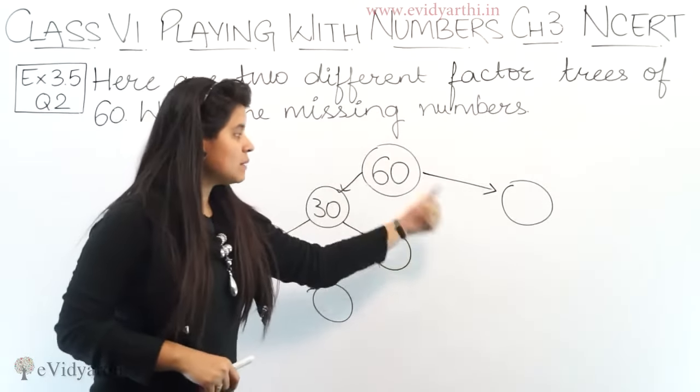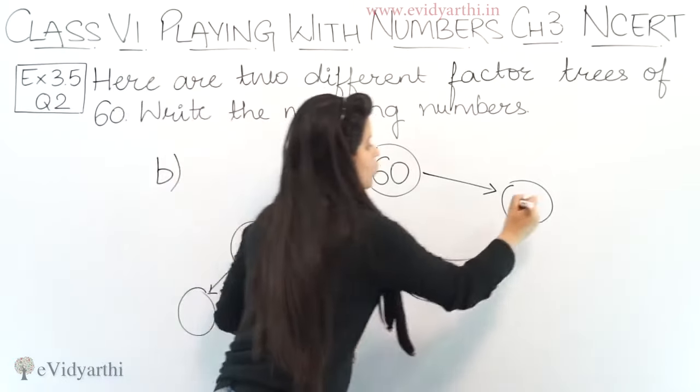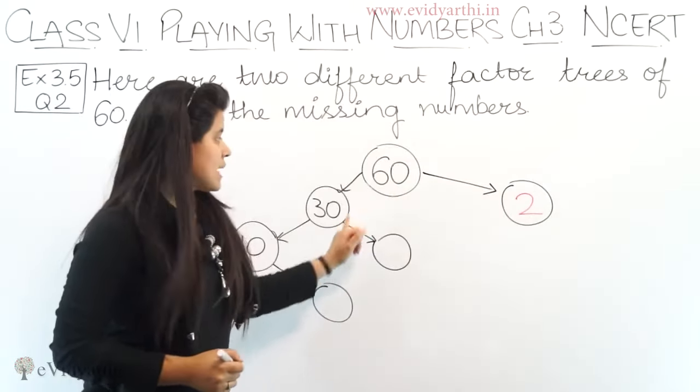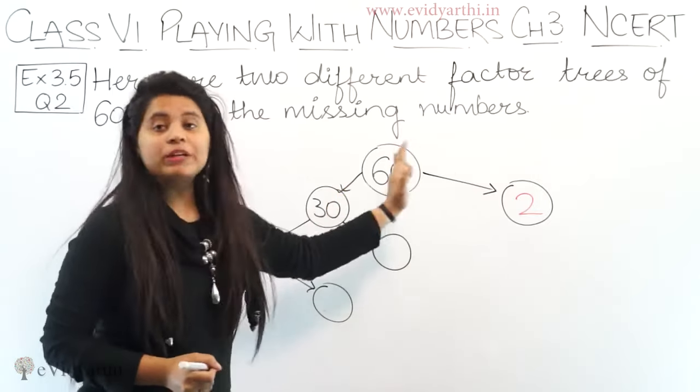One is 30. Now what do we multiply 30 by to get 60? That will be 2. First, 3 twos are 6, and then add 0. 30 into 2 will be 60.